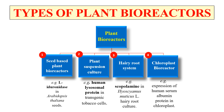First, foreign genes are inserted into nuclear chromosomes and then the expressed protein is targeted into the chloroplast. Or second, foreign genes are directly targeted into the chloroplast genome. For example, human serum albumin protein was expressed in the chloroplast. These are the types of plant bioreactors on the basis of which part of the plant is used for production.